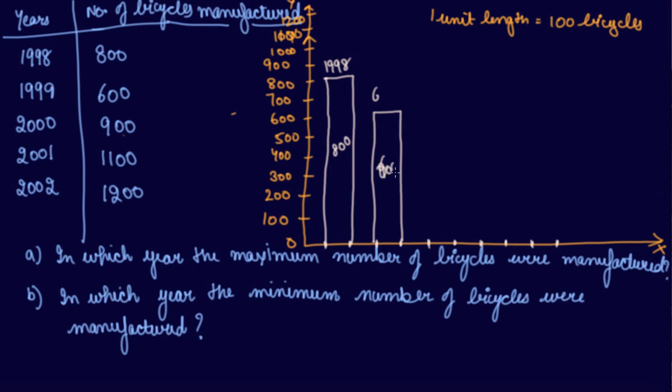2000, if I say 900 bicycles were produced, 900 bicycles were produced. So 900, in 2000, 900 bicycles were produced.